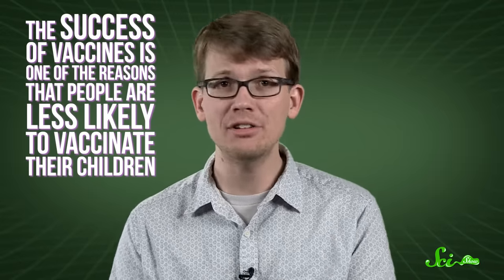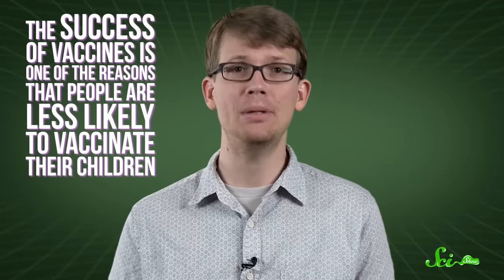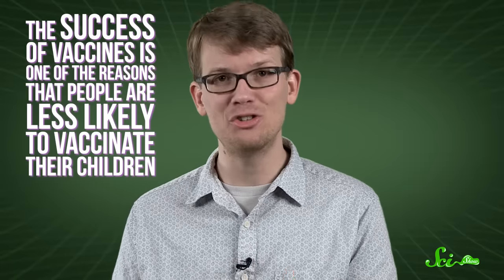Risk perception is basically a science all on its own, and we've found that vague future hazards, like the future probability of an illness, are far less frightening than immediate specific hazards, like the sudden onset of autism. So amazingly, the success of vaccines is one of the reasons that people are less likely to vaccinate their children.